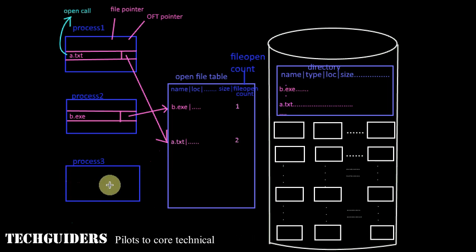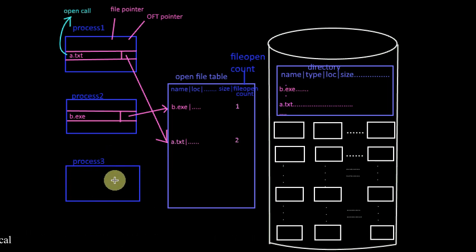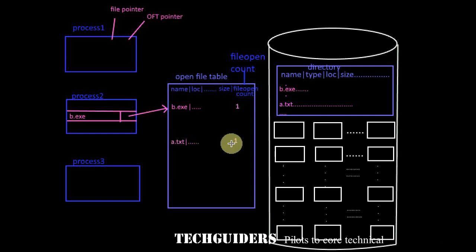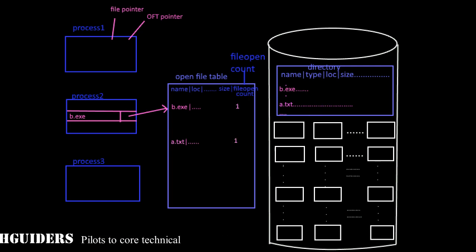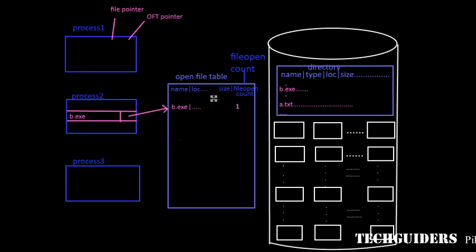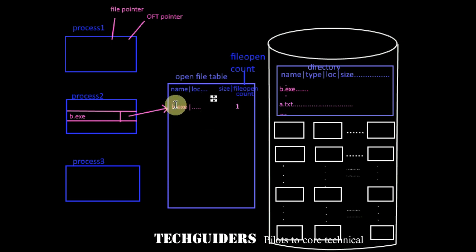When a file is closed by a process, the per-process table entry is freed and the file open count is decremented. When process 1 also closes the file, the file open count for a.txt will be decremented once more and become 0. When the counter reaches 0, it means no more instances of this file are open in the system, and the open file table entry is also freed, making space for other files.